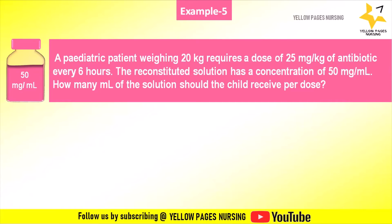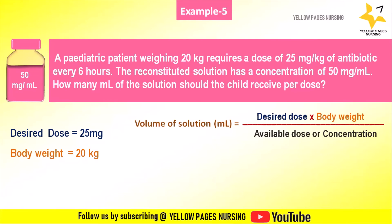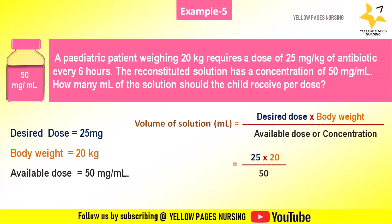The next example: a pediatric patient weighing 20 kilogram requires a dose of 25 milligram per kg of antibiotic every six hours. The reconstituted solution has a concentration of 50 milligram per ml. How many ml of the solution should the child receive per dose? The formula is: volume of solution (ml) = desired dose × body weight divided by available dose or concentration. Here desired dose is 25 mg/kg, body weight is 20 kg, and available dose is 50 mg/ml. So volume equals 25 × 20 divided by 50, which gives 10 ml. The pediatric patient should receive 10 ml per dose.